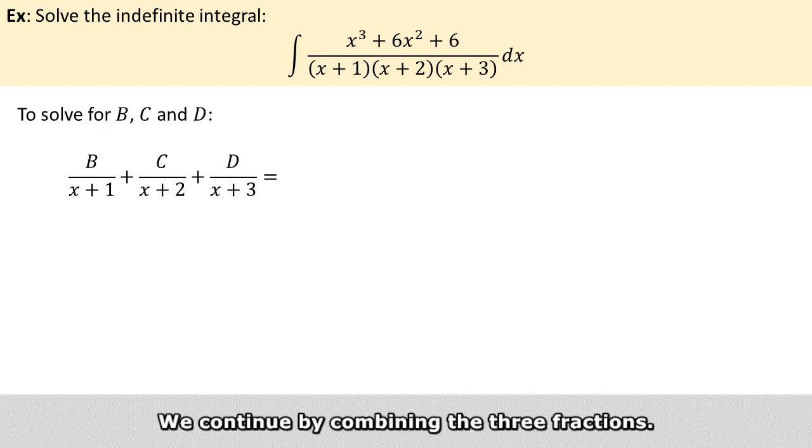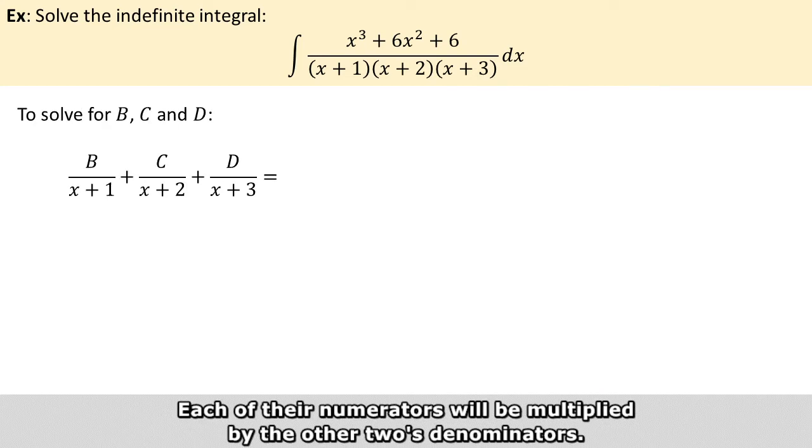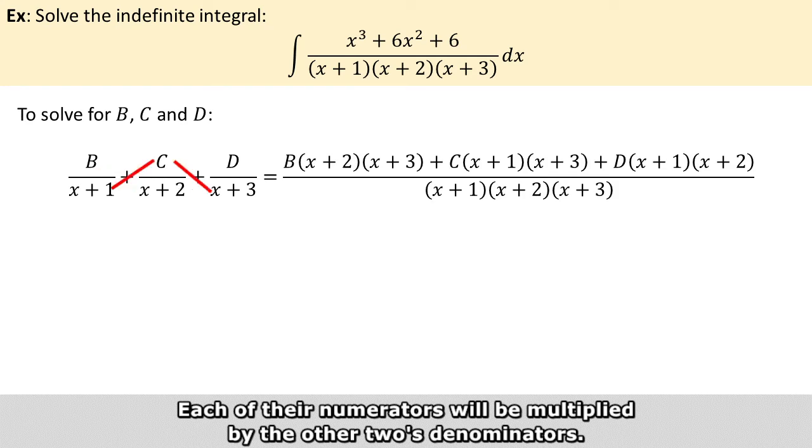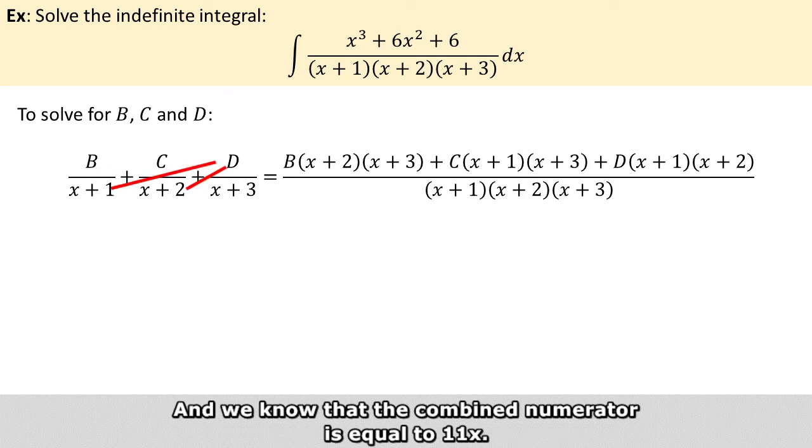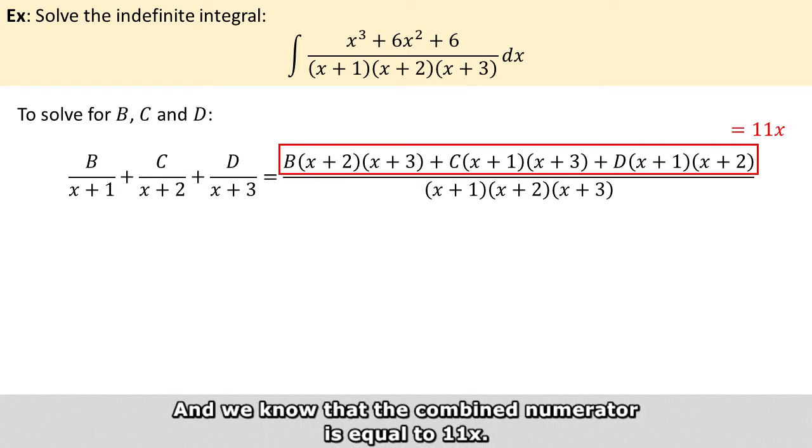We continue by combining the three fractions. Each of their numerators will be multiplied by the other two's denominators. And we know that the combined numerator is equal to 11x.